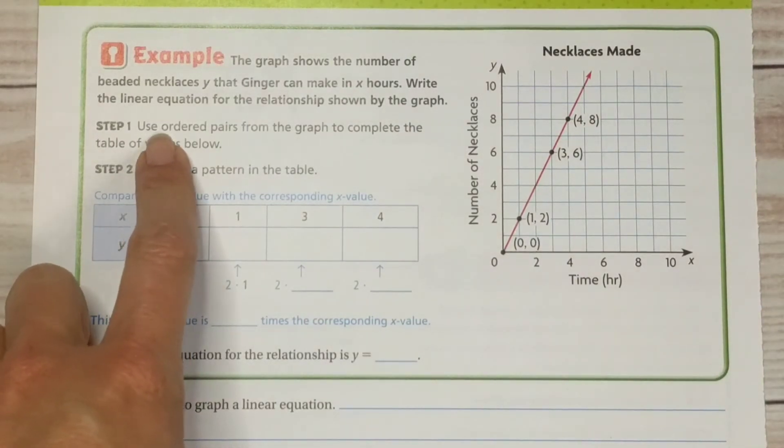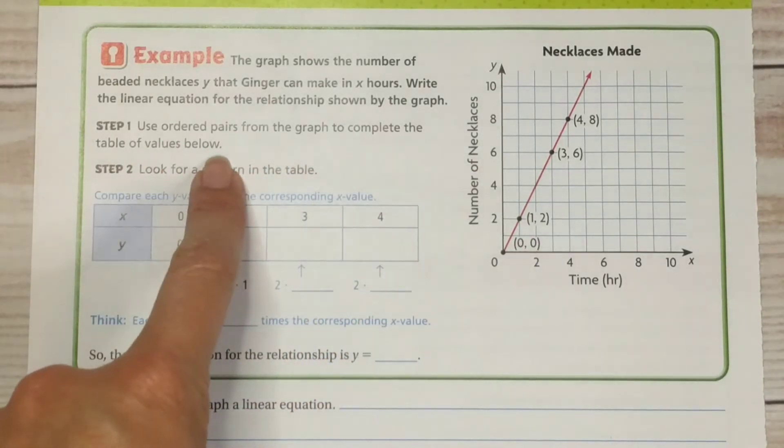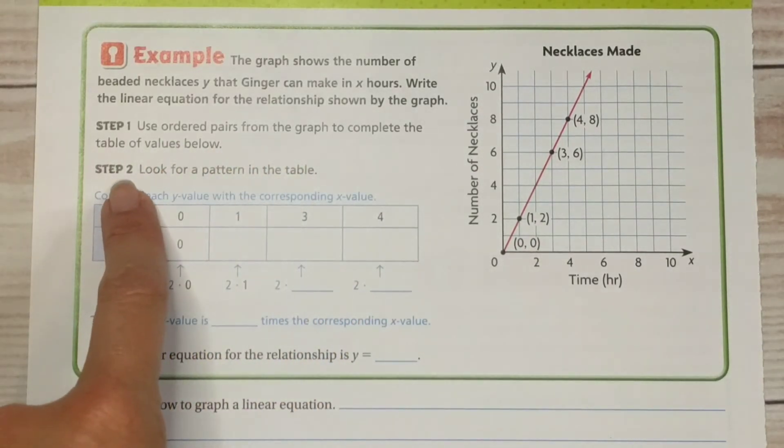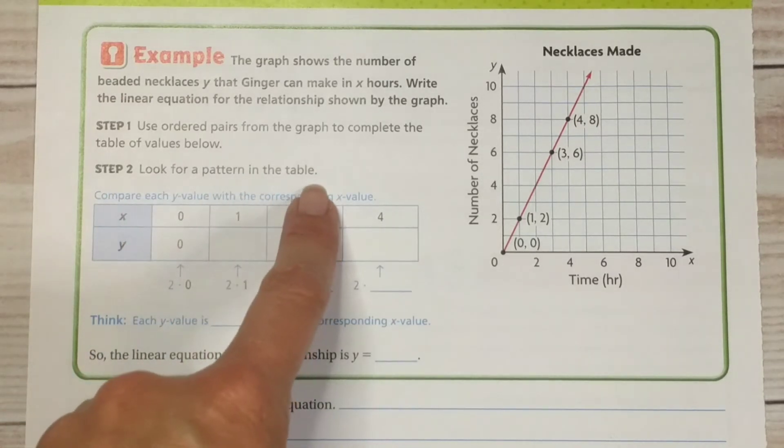Step one, use ordered pairs from the graph to complete the table of values below. Step two, look for a pattern in the table.